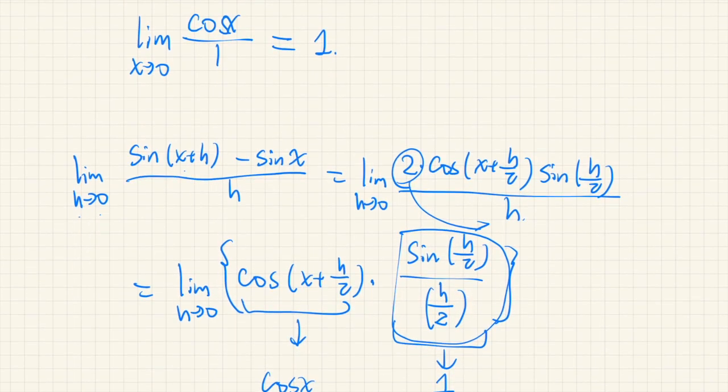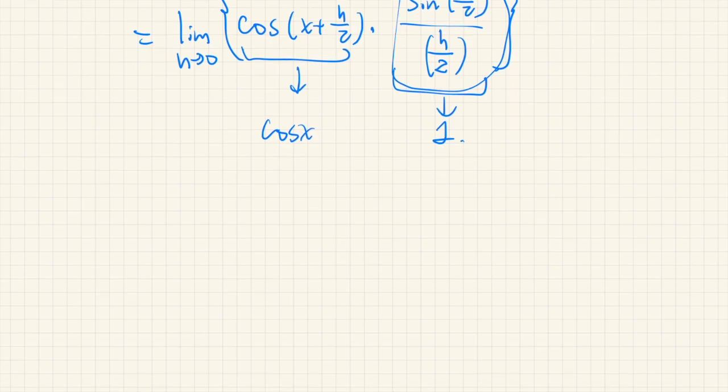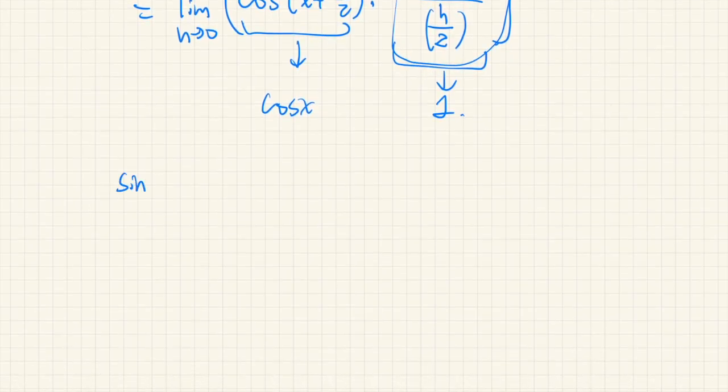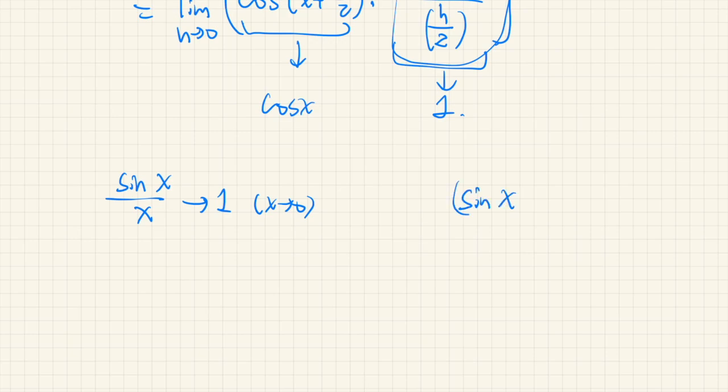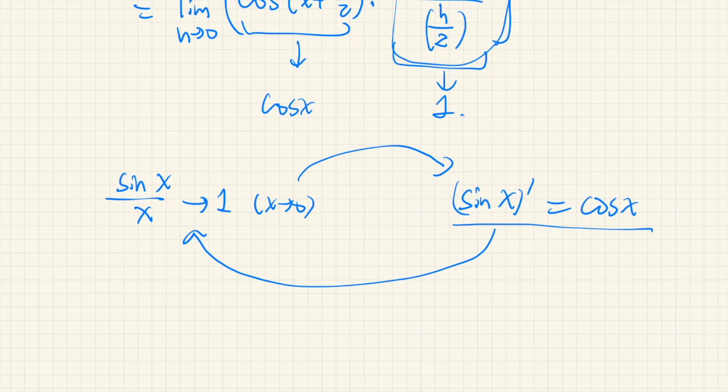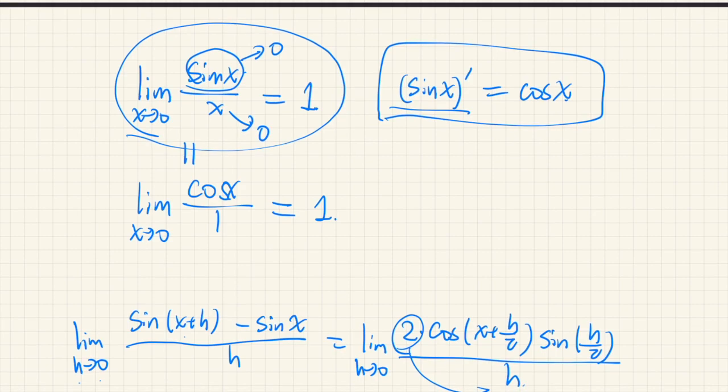You see the problem here? When we try to prove sine x over x converges to 1 as x goes to 0, we used the fact that the derivative of sine x is cos x. But when we try to prove the derivative of sine x is cos x, we actually used this limit. So it's a circular logic, circular dependency.